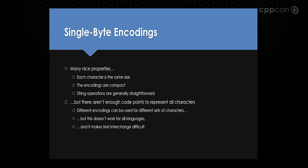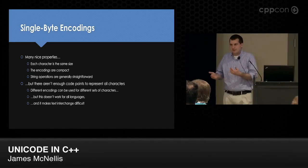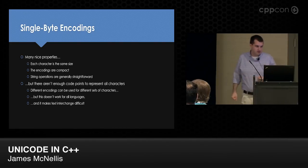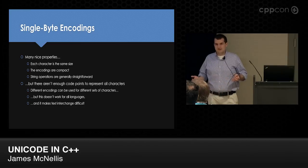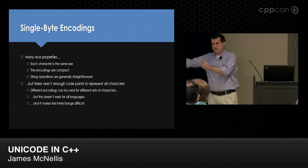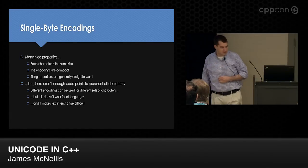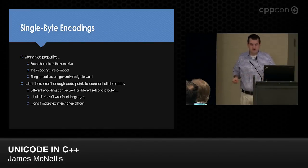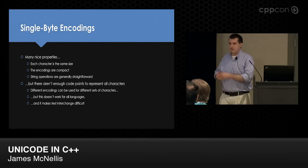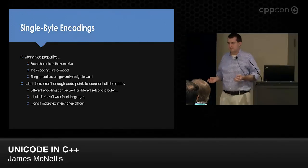To summarize, single-byte encodings have nice properties: each character is the same size, encodings are compact at one byte per character, and string operations are straightforward — we have strcpy, strlen, and C++ equivalents. But there aren't enough code points to represent all characters. Even with just European languages we can't fit everything in 256 code points, and when we include Asian languages, which have many more characters, this is a major problem.